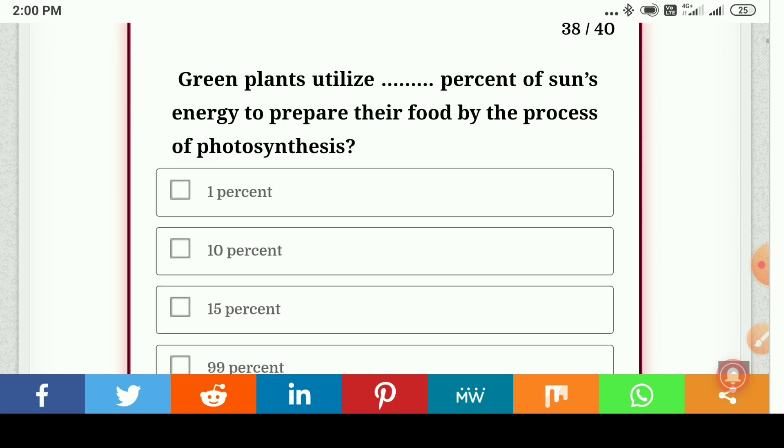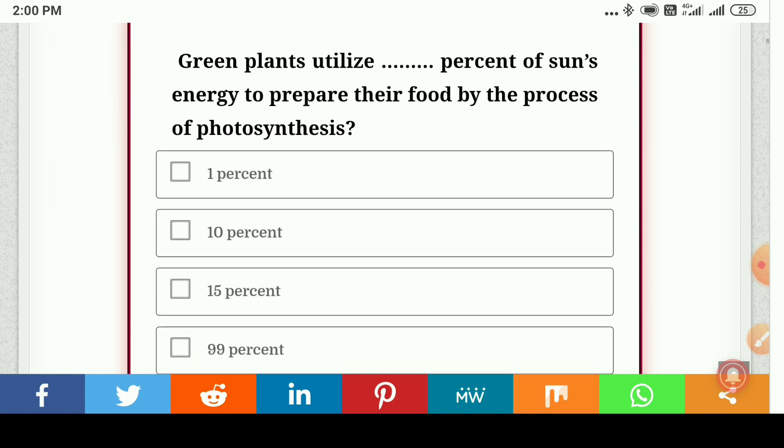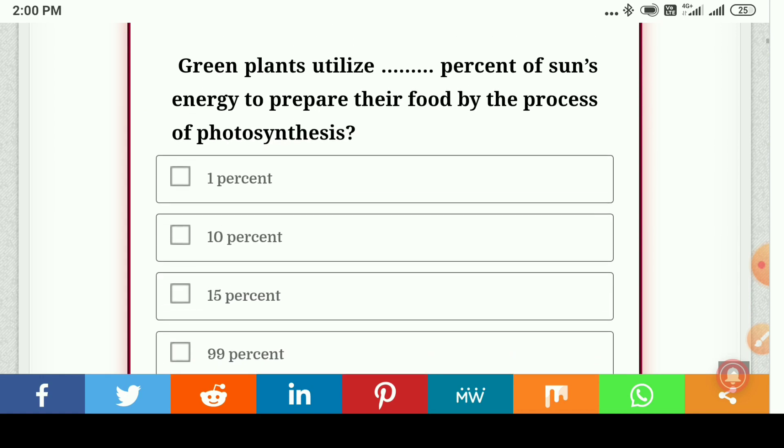Green plants utilize what percentage of sun's energy to prepare their food by the process of photosynthesis: 1 percent, 10 percent, 15 percent, or 99 percent? The correct answer is 1 percent.